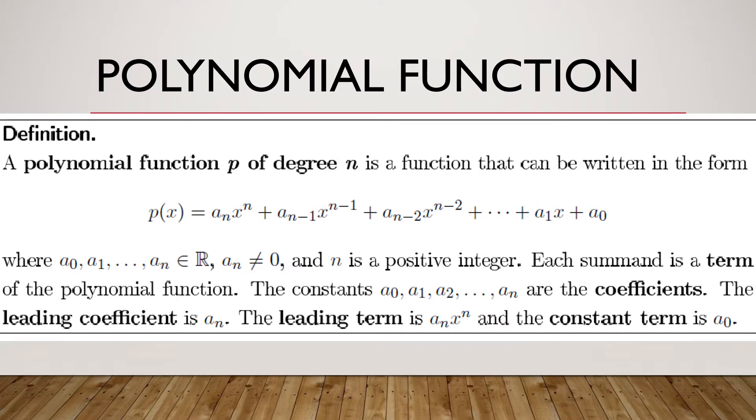So n is a positive integer, meaning to say it is from 1, 2, 3, 4, 5, 6 and so on. Each summand is a term of the polynomial function.